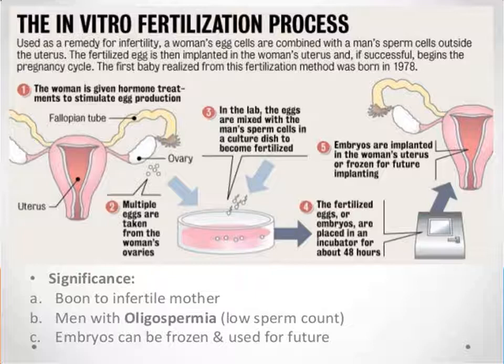In ZIFT — zygote intrafallopian transfer — we transfer the zygote or early embryos up to only eight blastomeres into the fallopian tube. In intrauterine transfer, embryos with more than eight blastomeres are transferred into the uterus. The embryo formed by in vivo fertilization — that is, fertilization within the female — can also be used for such transfer to assist females who cannot conceive.